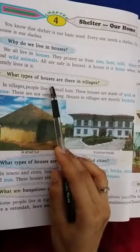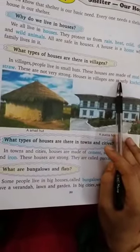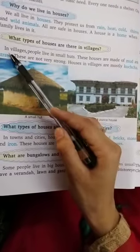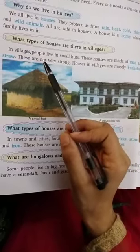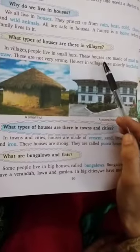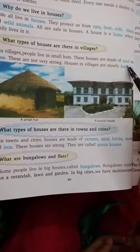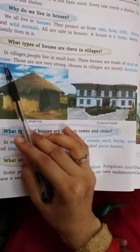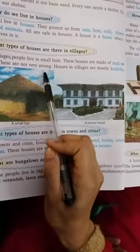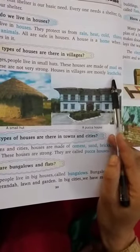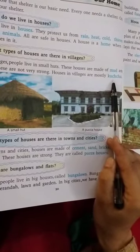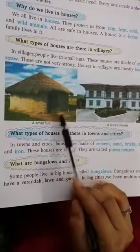What types of houses are there in a village? गाँव में किस प्रकार के घर होते हैं? In villages, people live in small huts. गाँव में लोग छोटी झोंपड़ियों में रहते हैं। These houses are made of mud and straw. वे घर मिट्टी और पुआल के बने होते हैं। These are not very strong. ये ज़्यादा मजबूत नहीं होते। Houses in villages are mostly kaccha. गाँव में घर अधिकतर कच्चे होते हैं।